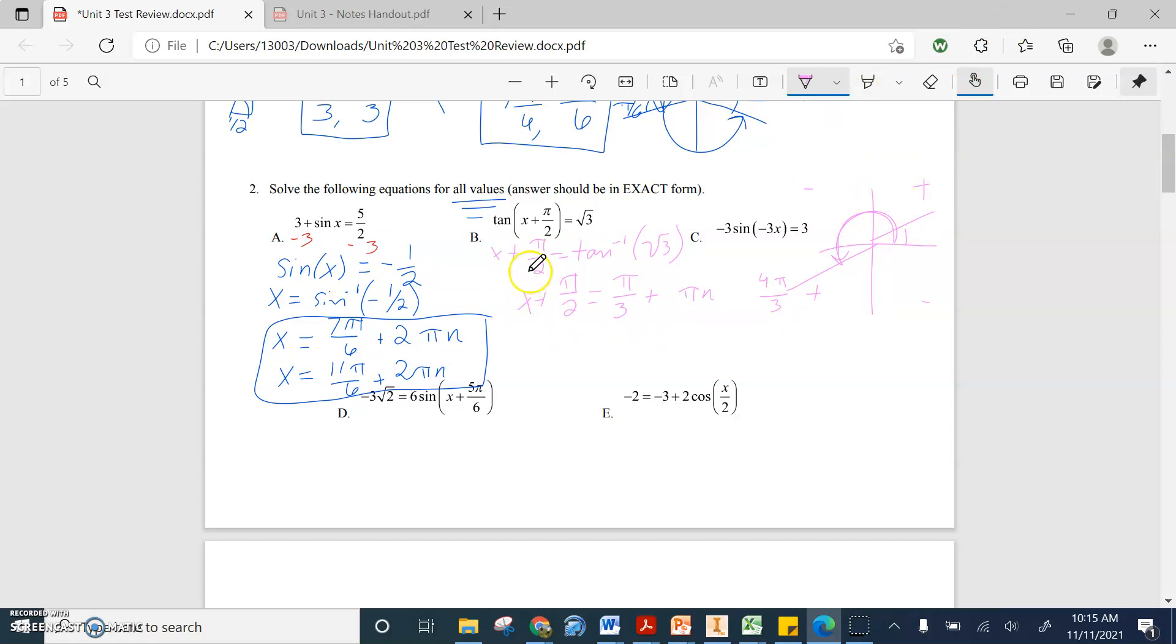Now, the last step, get x by itself, we have to subtract pi over two from both sides. So if I subtract pi over two from the left, x plus pi over two minus pi over two, x equals pi over three minus pi over two plus pi n. Well, I can't just take these two fractions and combine them right now. I do need to combine them. I just can't right now, because the denominators are different. So the least common denominator here is six, so that's two pi over six minus three pi over six plus pi n. So x equals, well, two pi over six minus three pi over six equals negative pi over six plus pi n. And that is the only answer. I don't need two for tangents.